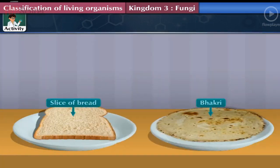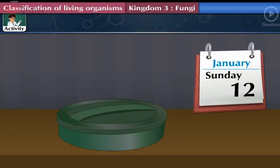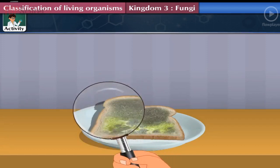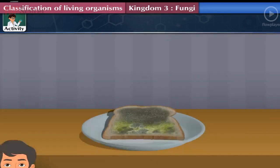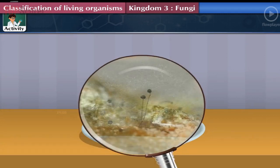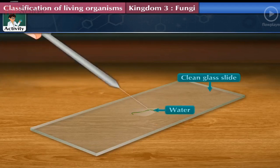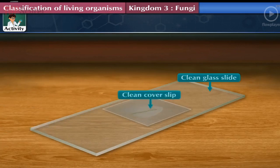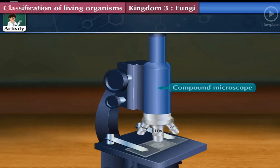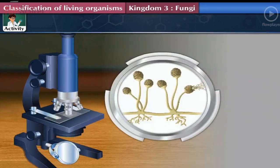Activity: Take a moist slice of bread or bhakri and keep it in a container with a lid for 2–3 days. After 2–3 days, we see fine cotton thread-like tufts growing on the surface of the bread. Take a few of these threads on a clean glass slide, put a drop of water on it, and cover with a clean coverslip. Observe this temporary mount under the compound microscope. We see thin, colourless, branched, thread-like filaments with black-coloured rounded structures.